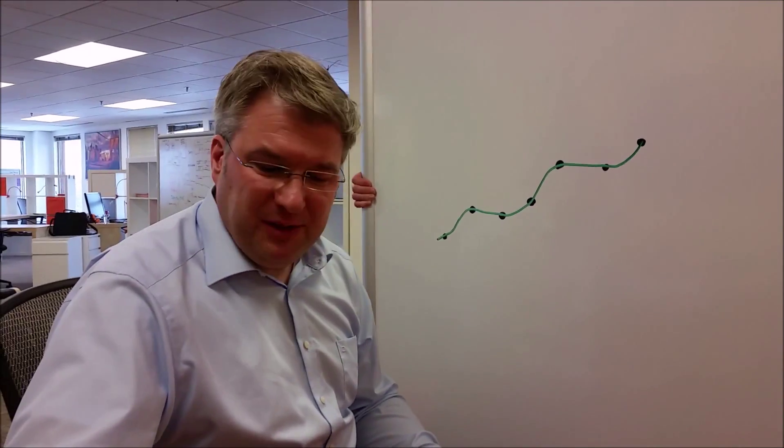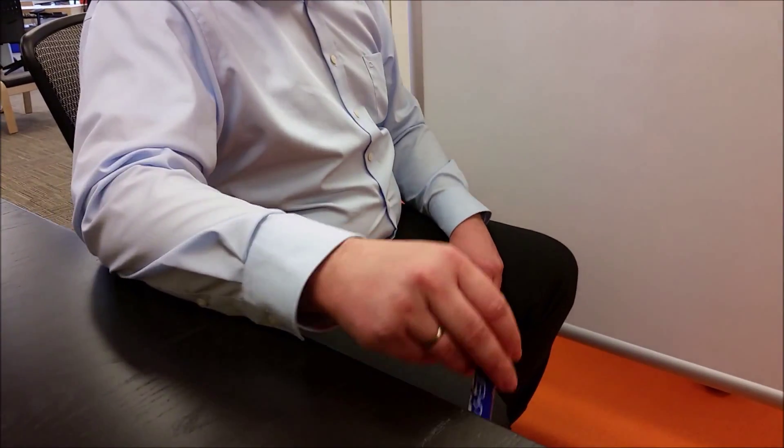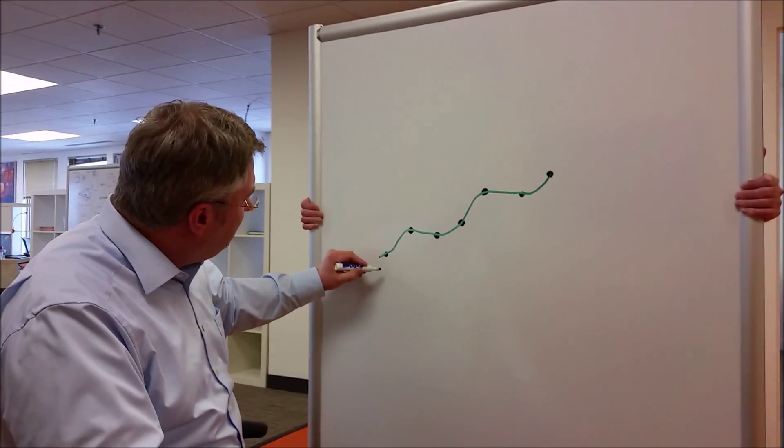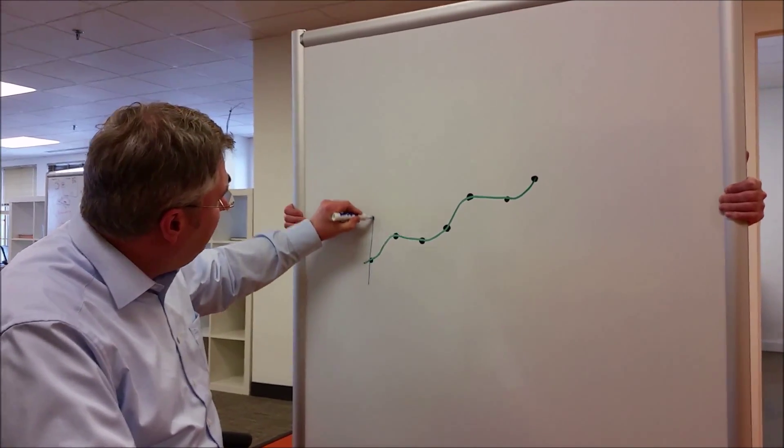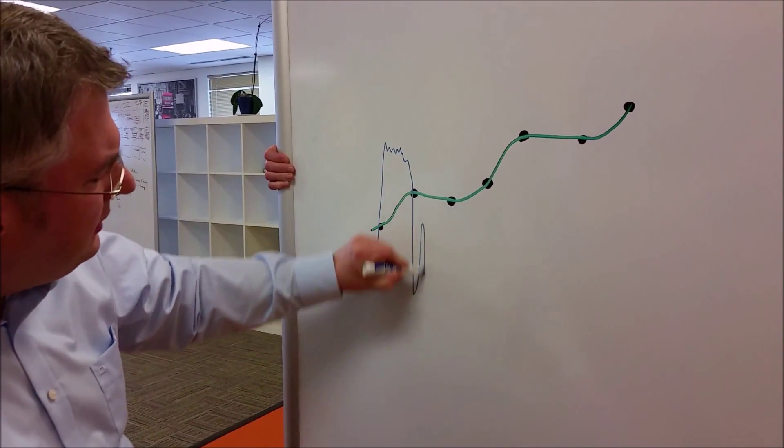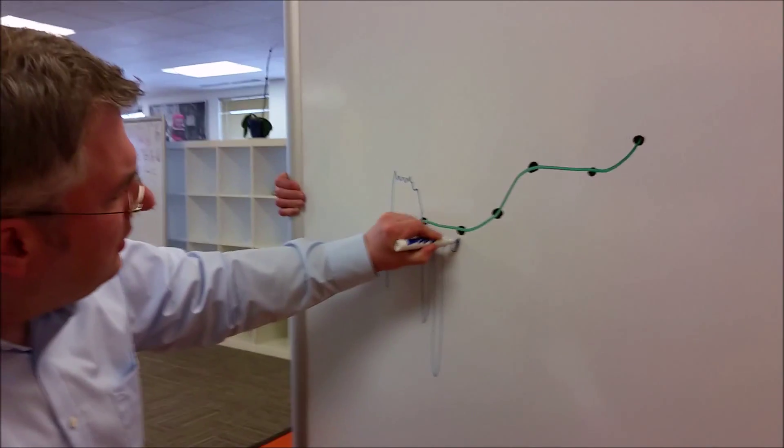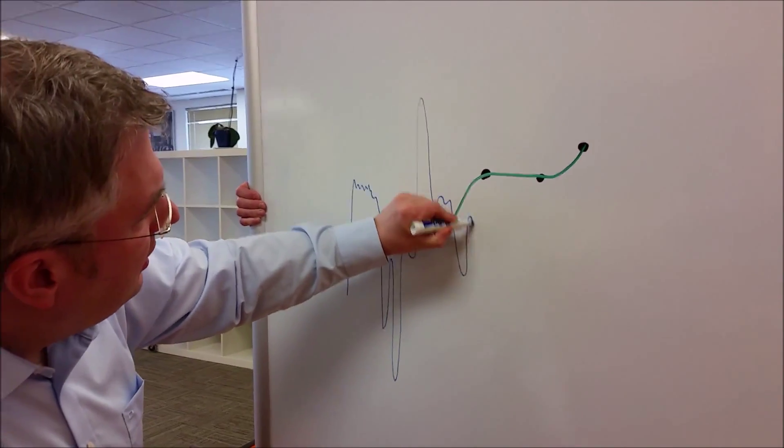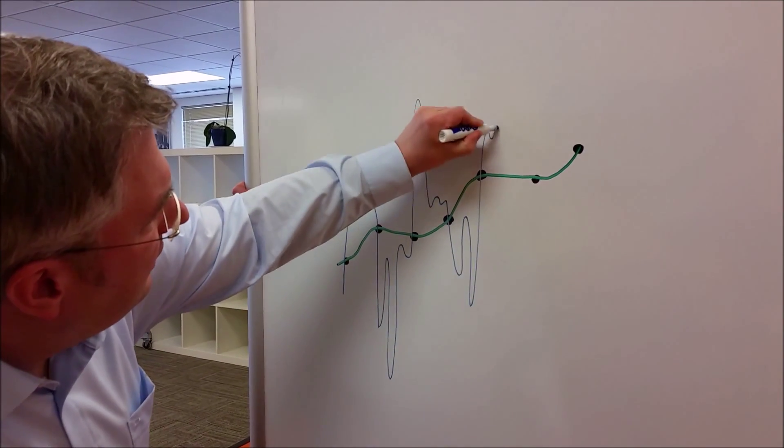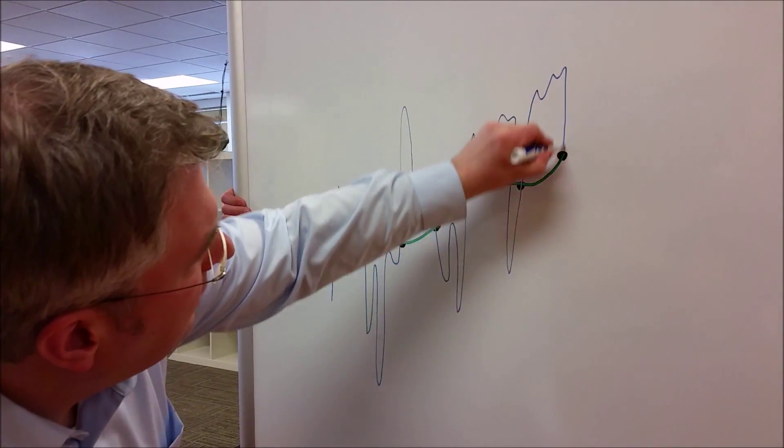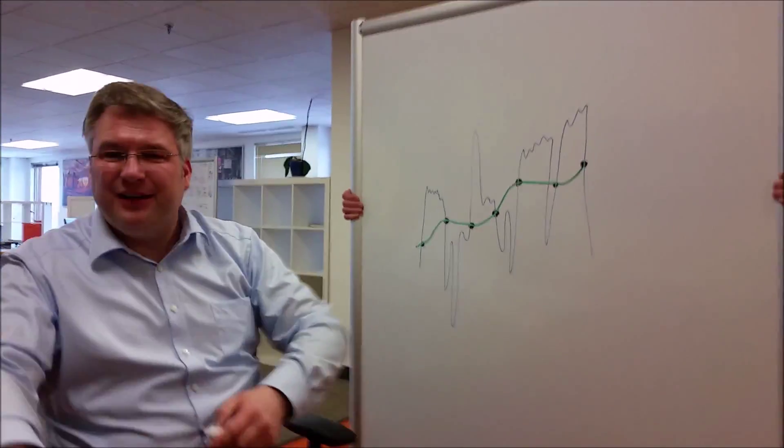So maybe we can come up with something else. I, for example, could go with this function here. I could go up here, a little bit around, and down again. Oof. Yeah, that's complex. I know. Non-linear, you might say. Yeah, it's probably not really linear.